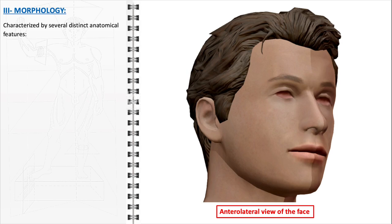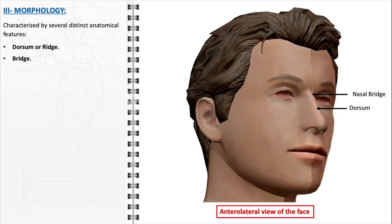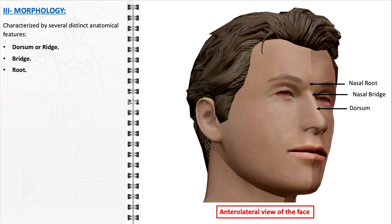The morphology of the external nose is characterized by several distinct anatomical features. The dorsum or ridge is the vertical component extending from the root down to the tip, contributing significantly to the profile of the nose. The bridge is the upper part of the nose formed by the nasal bones, located between the eyes, extending to where bone transitions to cartilage. The root, located at the top of the nose where it meets the forehead, is known as the nasion, where the nasal bones connect with the frontal bone.